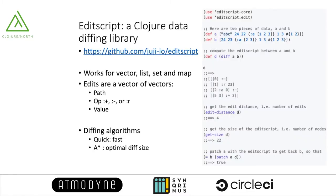In order to do all that, we have developed a data diffing library for Clojure and ClojureScript. We call it EditScript. EditScript works on all regular Clojure data structures: vectors, lists, sets, and maps. You can also implement our protocols to handle your own custom data structures.